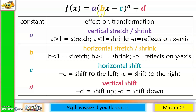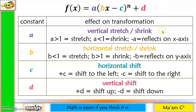For b: if b > 1, the graph shrinks horizontally; if b < 1, it stretches horizontally. A negative sign on b reflects the graph on the y-axis. For c: if you see minus c, the graph moves to the right; if you see plus c, it moves to the left. For d: plus d moves the graph up, minus d moves it down.